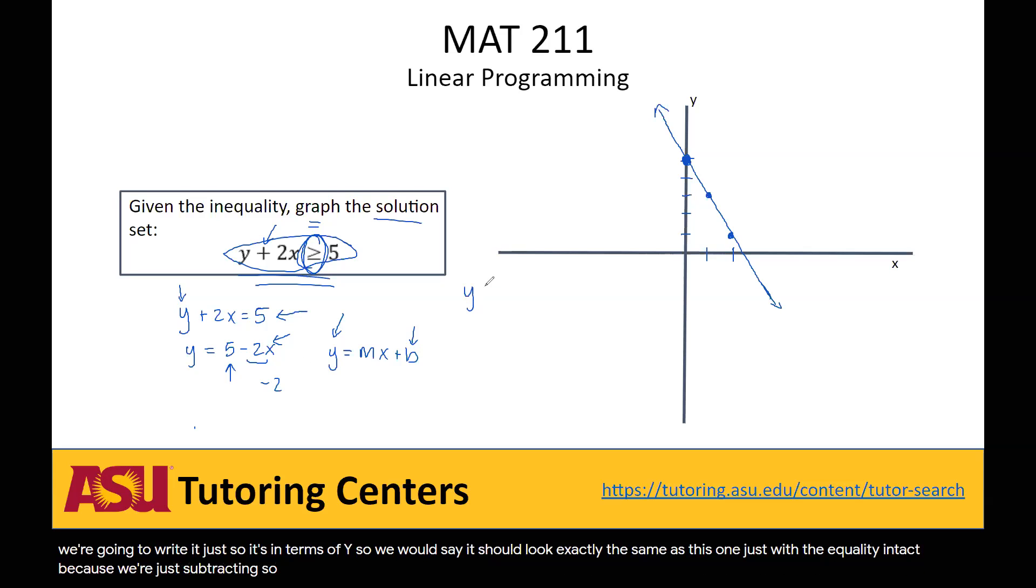So y plus 2x is greater than or equal to 5. If we subtract our 2x over to this side, we're going to have y is greater than or equal to 5 minus 2x.